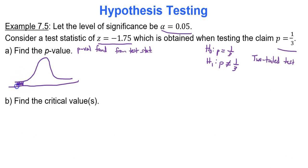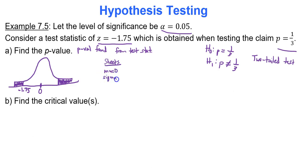Draw your bell curve — since it's a two-tailed test, shade the left tail and shade the right tail. We're dealing with z-scores, so the mean is 0. The test statistic of negative 1.75 is negative, so it goes to the left of 0 — it's the cutoff value separating the left tail from the rest of the bell curve. In Google Sheets, mu equals 0, sigma equals 1, lower bound is negative 6 nines, upper bound is negative 1.75. Find the area of that left tail.